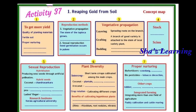That is a new plant. In vegetative propagation, the stem of tapioca grows, and the root of the curry leaves grows to form a new plant.